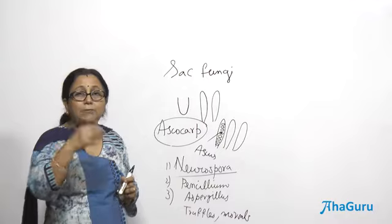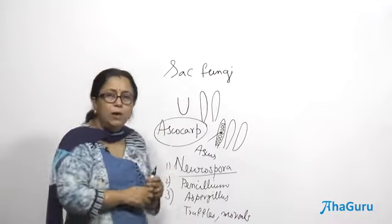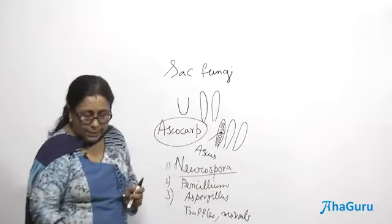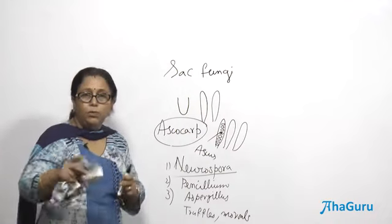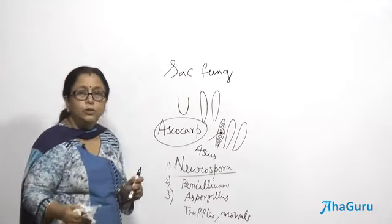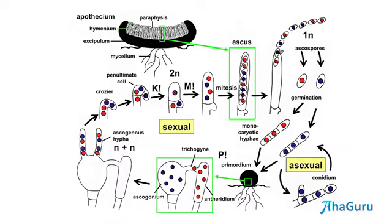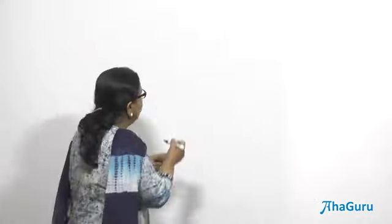Now let us look at the life cycle of ascomycetes. Ascomycetes reproduce both sexually and asexually. During the asexual phase, they produce a different kind of spores known as conidia. The black cup-shaped structures visible are truffles.